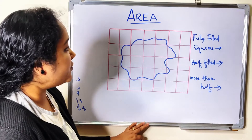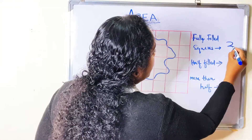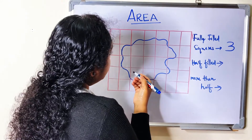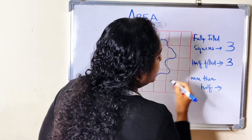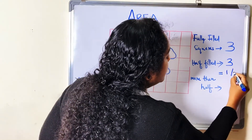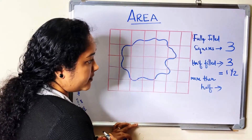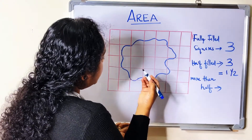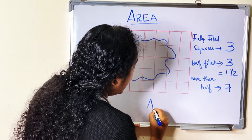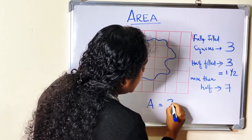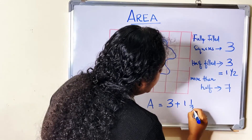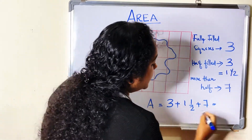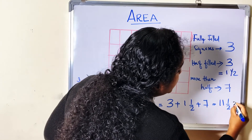In this figure, the fully filled squares are 1, 2, and 3 — so 3 fully filled squares. The half filled squares are 3, which equals 1 and a half square units. The more than half filled squares are 1, 2, 3, 4, 5, 6, 7 — so 7. The area of this irregular shape is 3 plus 1½ plus 7, which equals 11½ square units.